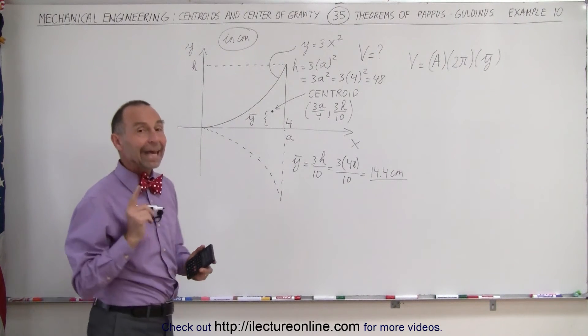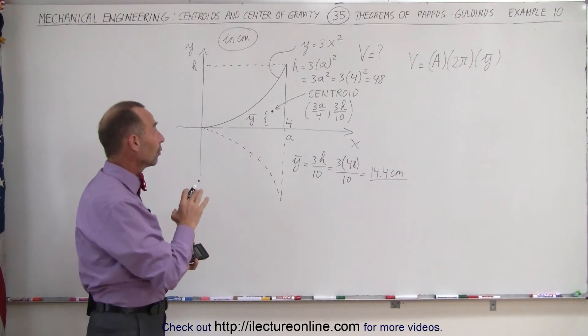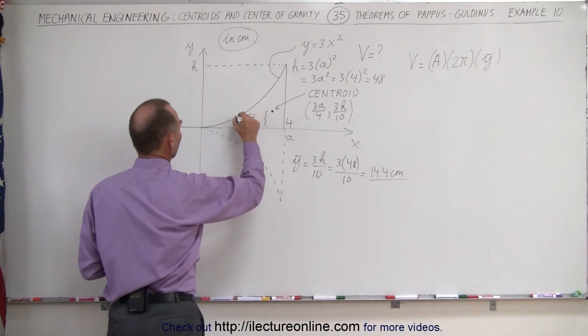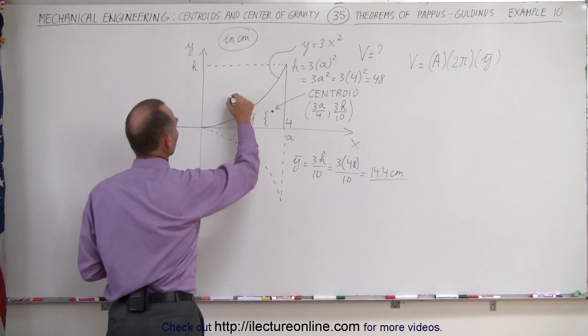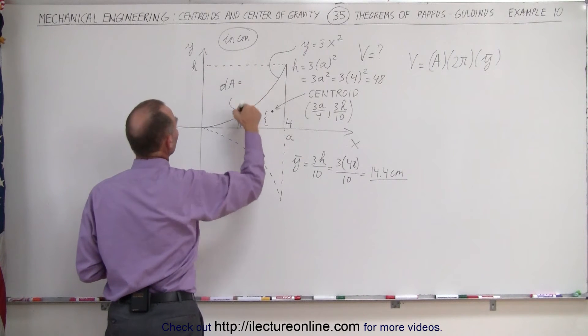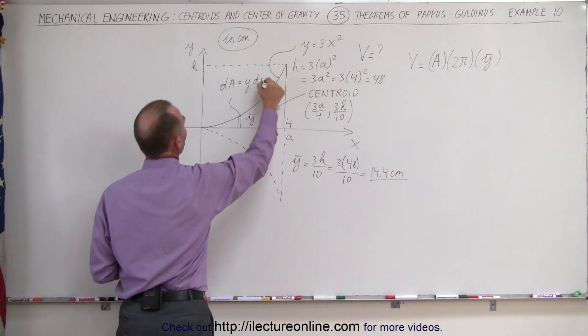Now we need to find the area and that's what's different about this particular example. The area cannot easily be found. We have to find this using integration. We can take a small little strip right here. The small strip has an area called dA. The dA would be equal to the height which is equal to y and the width which is equal to dx.